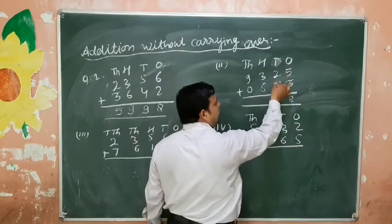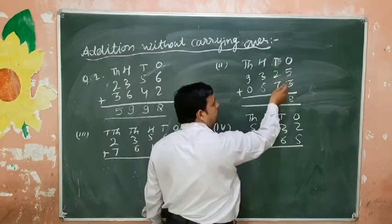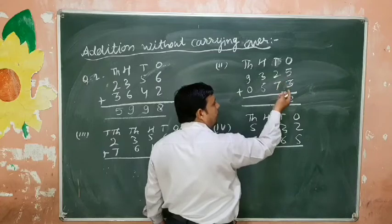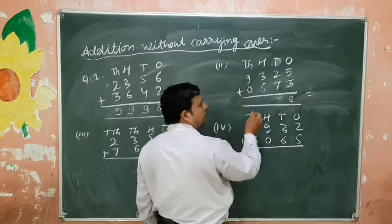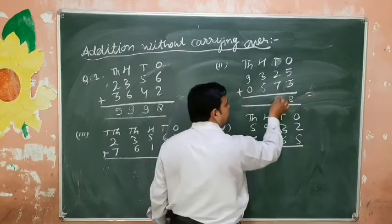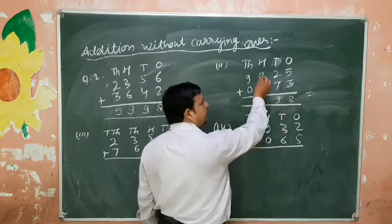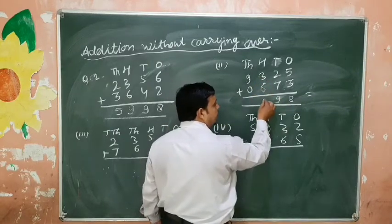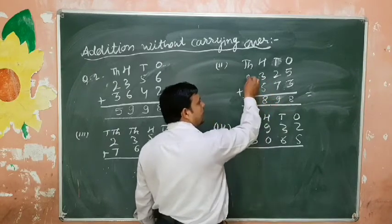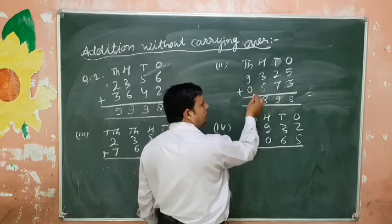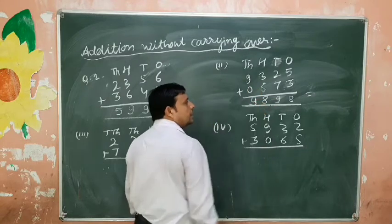Next example: ones place — seven plus two is nine. Tens place — five plus three is eight. Hundreds place — nine plus zero is nine. Students, when you add zero, the answer is the same.